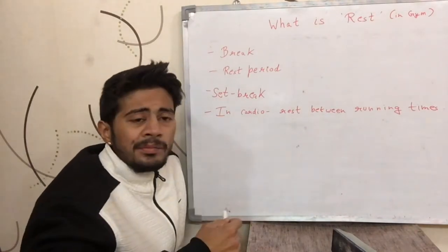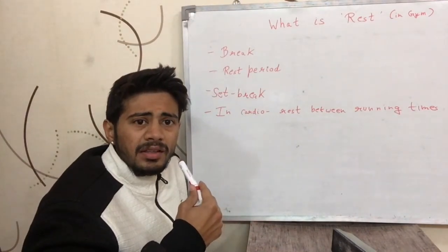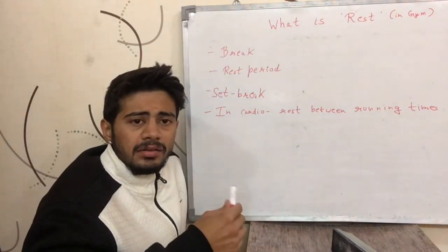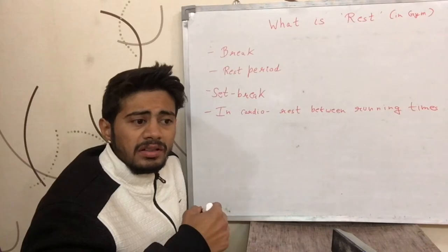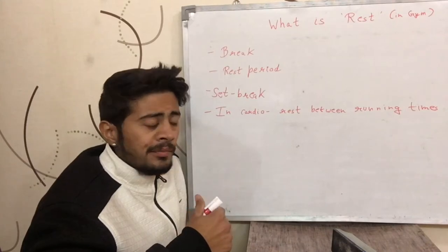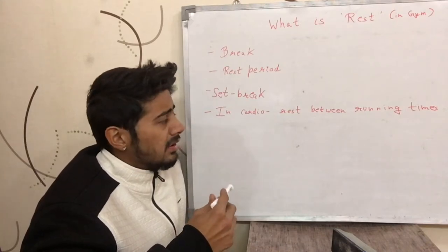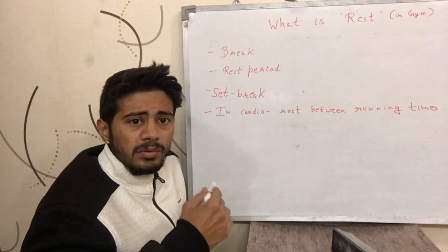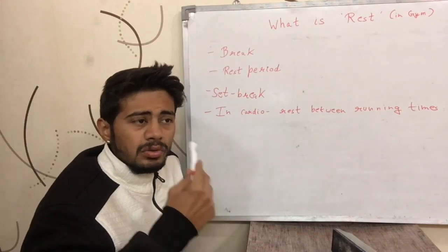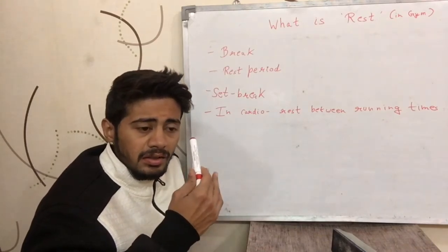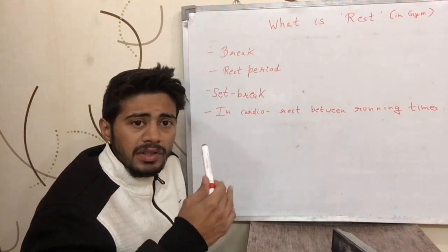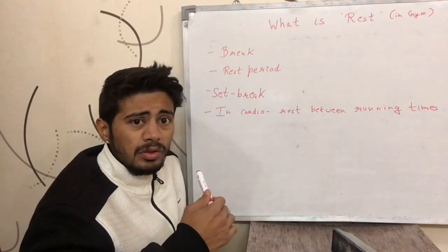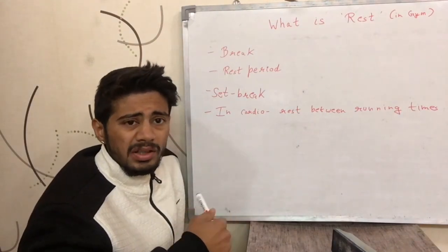In cardio, for activities like running, cycling, and cross-training, rest is the period when you stop — for example, if you were running for five minutes and then stopped before starting again. The period of time for which you stopped between your running is called rest.